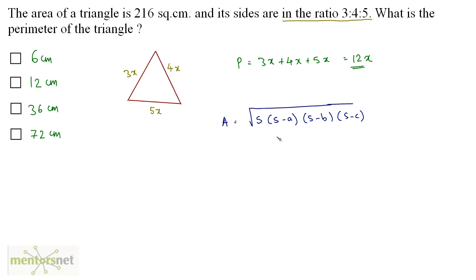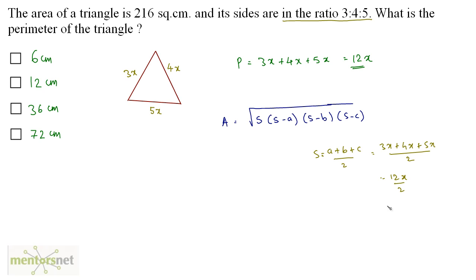That formula is the square root of s(s−a)(s−b)(s−c), where a, b, c are the sides of the triangle. We first calculate s, where s equals (a + b + c) / 2. With sides 3x, 4x, and 5x: s equals (3x + 4x + 5x) / 2, which is 12x / 2, giving s equals 6x.